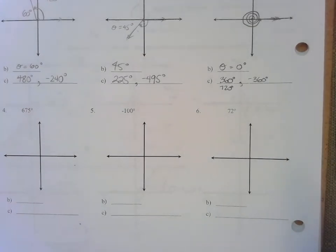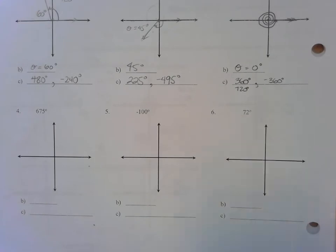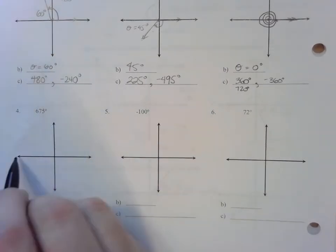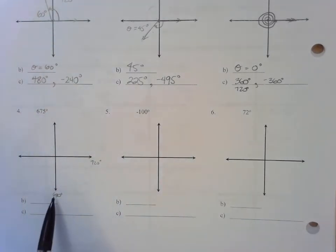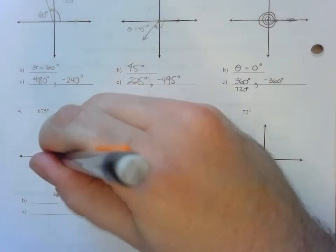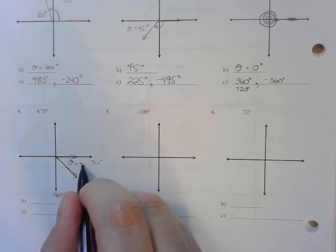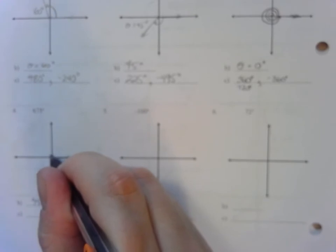Three more on the bottom. We'll draw them, find the reference angle, and find one positive and one negative coterminal angle. Exercise 4: 675 degrees. Counting up — 360, 450, 540, 630 — halfway between 630 and 720 would be our terminal side, so the reference angle is 45 degrees. It went all the way around once in the positive direction. Subtracting 360 from 675 gives 315 degrees; subtracting another 360 gives negative 45 degrees. These are the one positive and one negative coterminal angles.